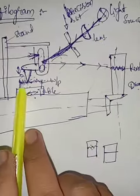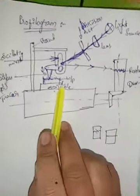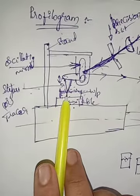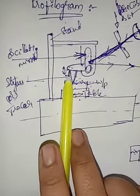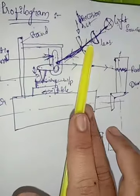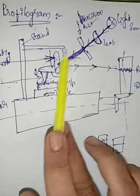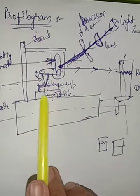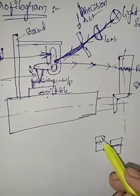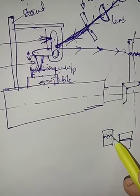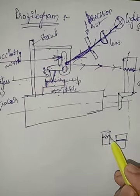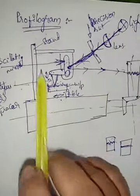So this is about the profilogram. The main parts are the work table, the workpiece which is to be tested, the light source, lens, and precision slit. This is one method which is used to measure surface roughness value or surface roughness by using the profilogram.